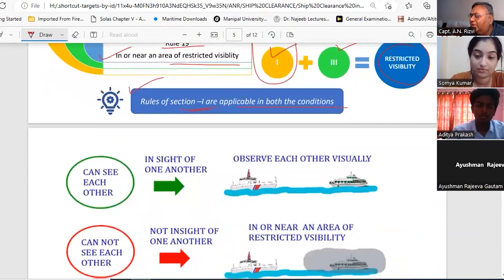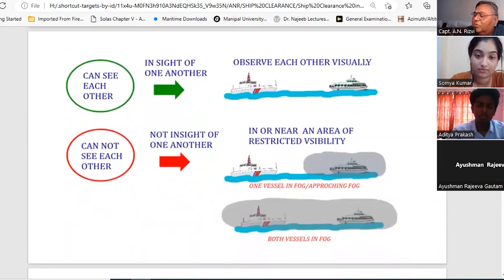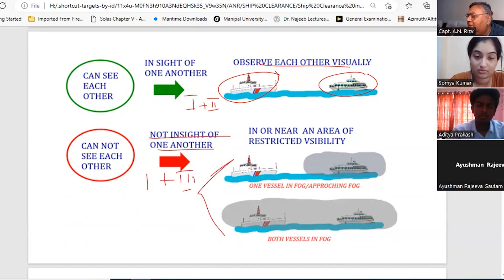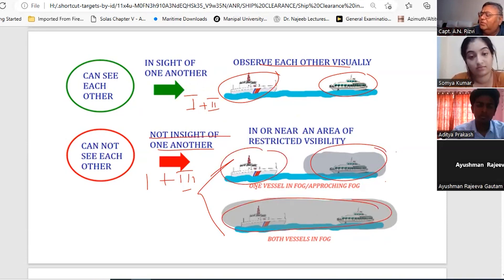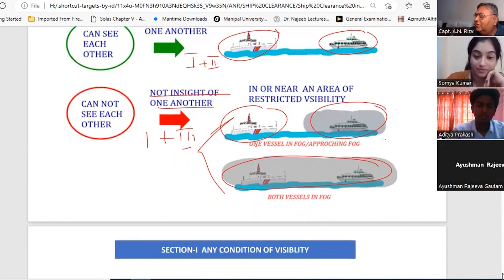So if you can see each other, like this vessel can see each other, that means this is section 1 plus section 2. Now if you cannot see each other, that is in or near an area of restricted visibility, then section 1 plus section 3. But this has two cases - one where one vessel cannot see other, so this is in fog and this is not in fog, or both the vessels are in fog. In this case you have to use the in or near an area of restricted visibility rules.